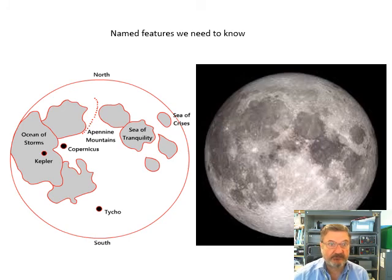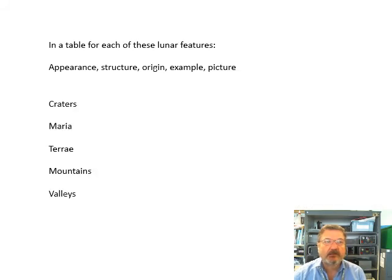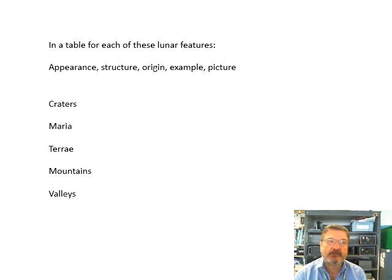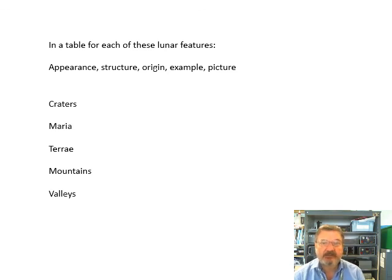You need to learn this stuff. What would be a very good idea is to make a table — see if you can complete it without looking at your notes. For craters, maria, terre, mountains, and valleys: write down what they look like, sketch them, talk about their structure and their origin, give an example, and find your own picture on the internet of each one. That covers the surface of the moon — the stuff on the surface that we need to know.